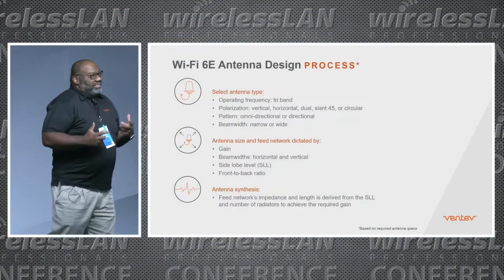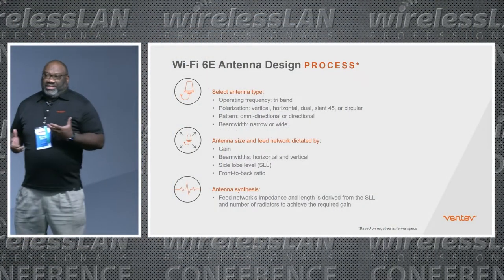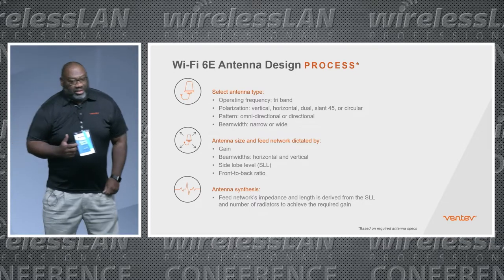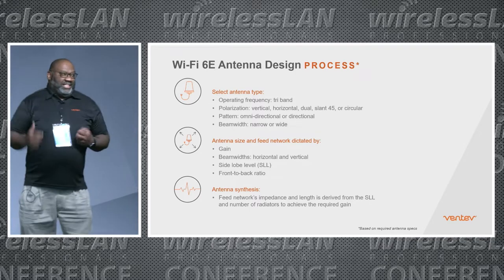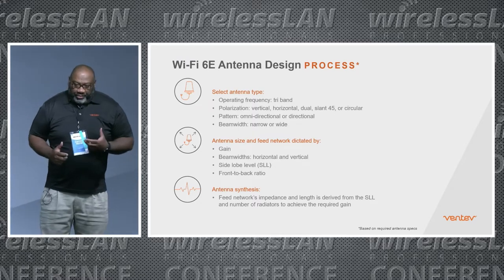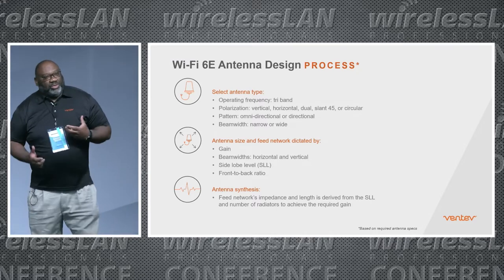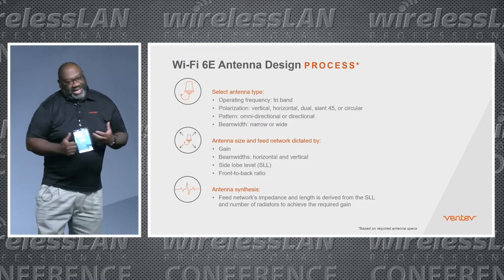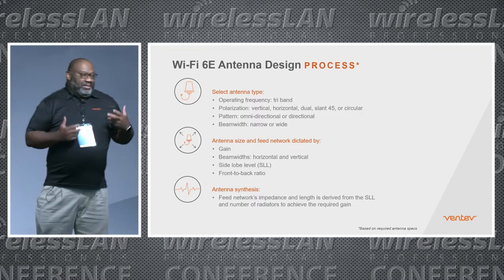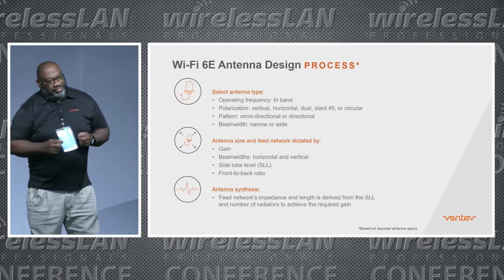What is our design process when we're going to design an antenna and use the 6E band? First, you want to select your antenna type — that's your basic building block. Then your operation frequency, which is going to be a tri-band design now. Typically we've done dual band in the past, so now we're going to do a tri-band including the 6 to 7 gigahertz frequency band.